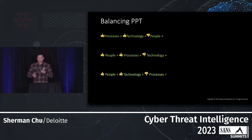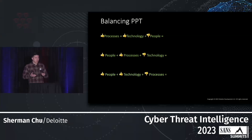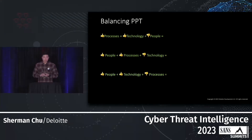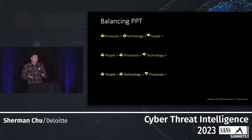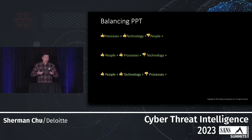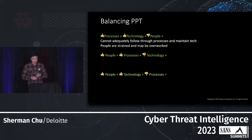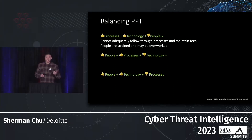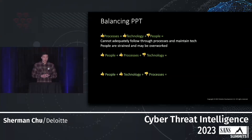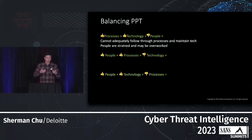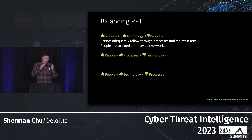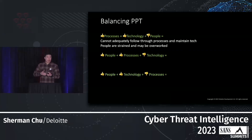Let's look at the balance between the three elements with some extreme hypotheticals. Reality dictates that equilibrium is hard to achieve. In the first scenario — strong processes and technology but low on people — you cannot adequately follow through on the technology or processes you've set up. People have to bounce between different work streams, become strained and overworked, and the output is suboptimal.